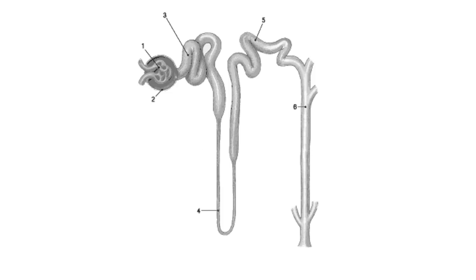You should also know the anatomy of a single nephron: (1) glomerulus, (2) Bowman's capsule — together forming the renal corpuscle; (3) proximal convoluted tubule; (4) loop of Henle, specifically the descending limb made of simple squamous epithelial tissue; (5) distal convoluted tubule; and (6) collecting duct.